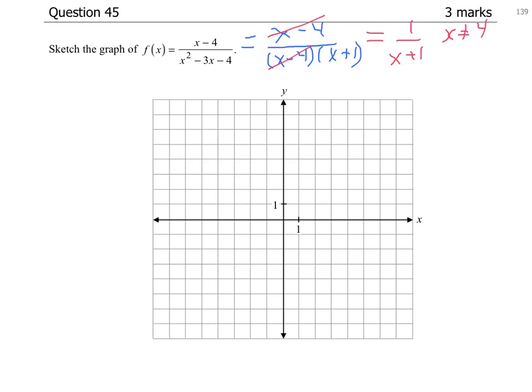So with any common factor that occurs once on the numerator and the denominator, that would be a hole. So there is a hole at x equals 4. So to find the coordinates of the hole, because we'd want to plot the hole, we need to get the y-coordinate.